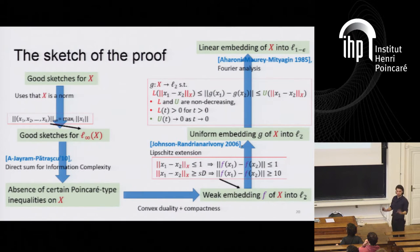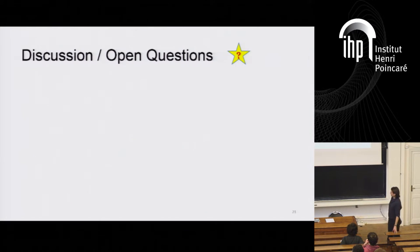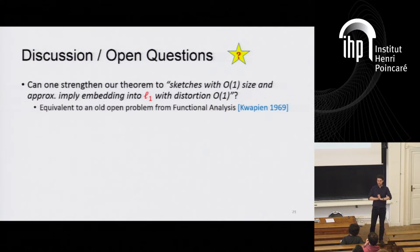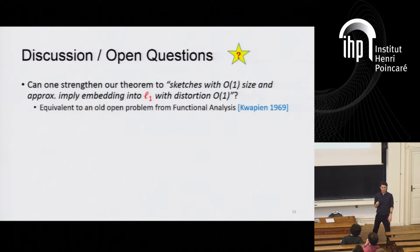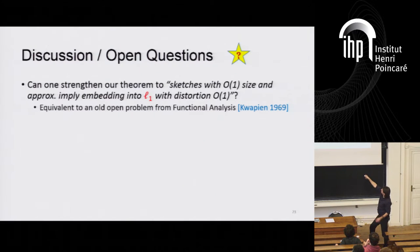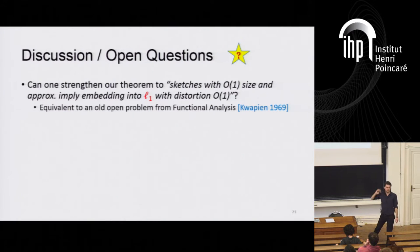So far, the theorem says: suppose you have efficient sketches — constant sketch size, constant approximation — then we can embed the same norm into L_{1-epsilon}. This L_{1-epsilon} looks a little weird; it would be nice to strengthen the theorem to say that efficient sketches imply embedding into L_1. It turns out this problem is quite non-trivial — with our theorem, it is basically equivalent to an open problem in functional analysis called the Kwartian problem, which asks: suppose you can embed something into L_{1-epsilon}, can you also embed into L_1? This is not known.